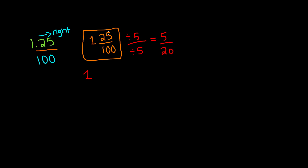Now we can simplify this further. 5 divided by 5 is 1, and 20 divided by 5 is 4, so we get 1 fourth. Our 1 and 25 over 100 can be simplified to 1 and 1 fourth.